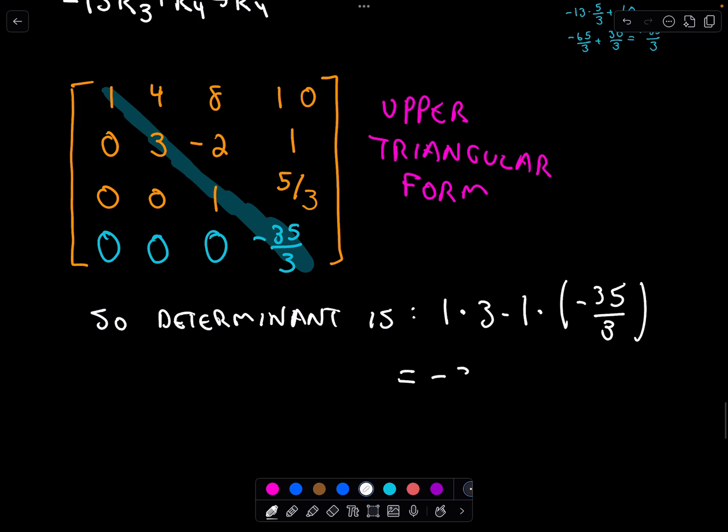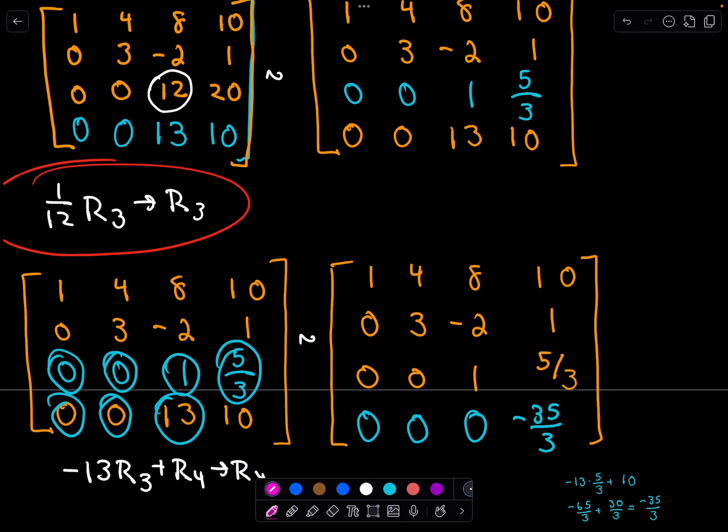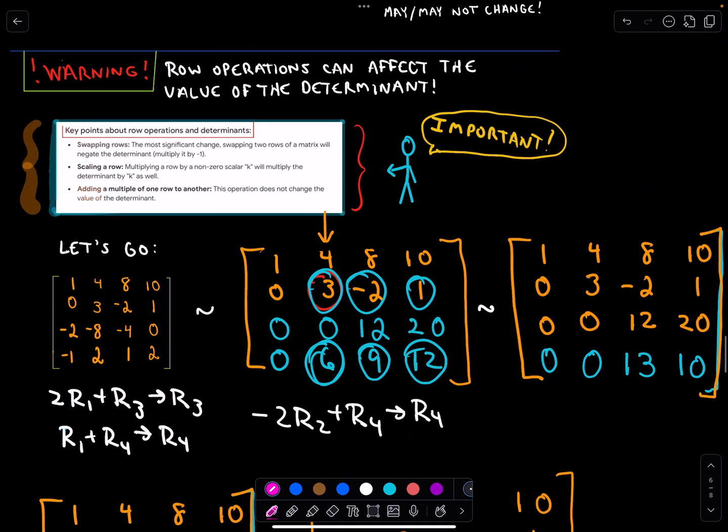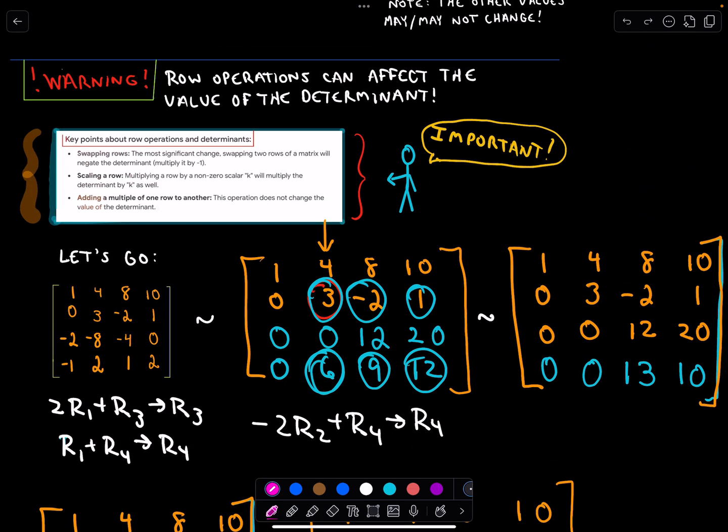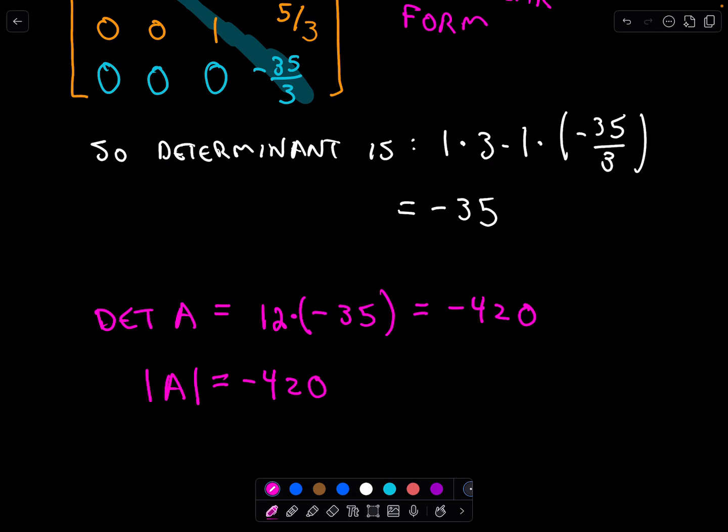The only row operation that changed our determinant was when we divided everything by 12 on that third row. That does the same thing to the determinant. So I actually took the determinant of my original matrix and divided it by 12. To recover it, I must simply multiply it by 12. So the determinant of that original matrix is -420. The notation, we can put that matrix A, it looks like it's an absolute value. The determinant of that matrix is equal to -420.